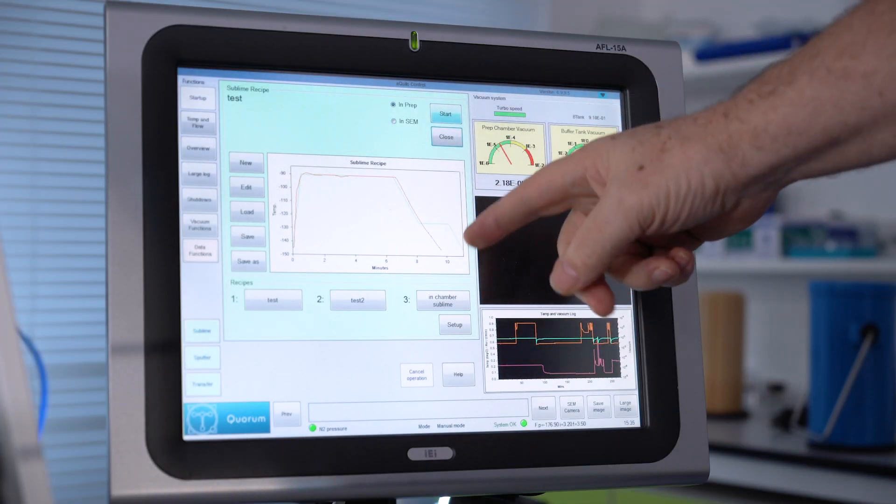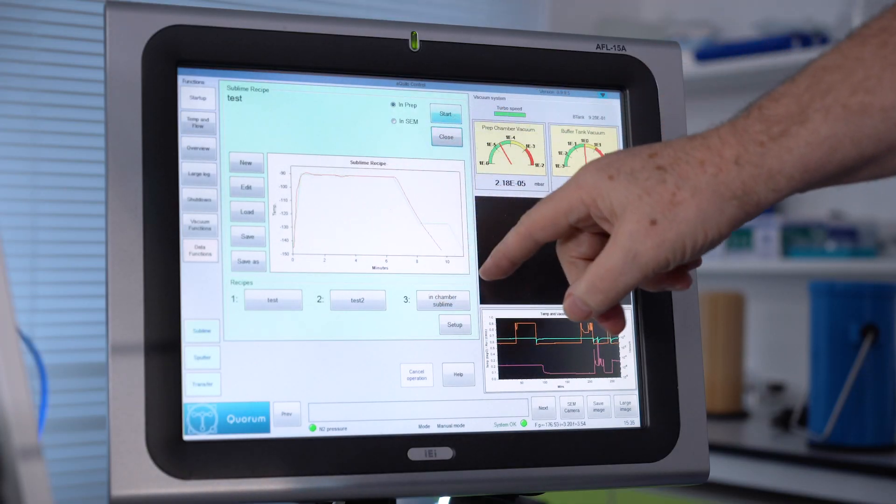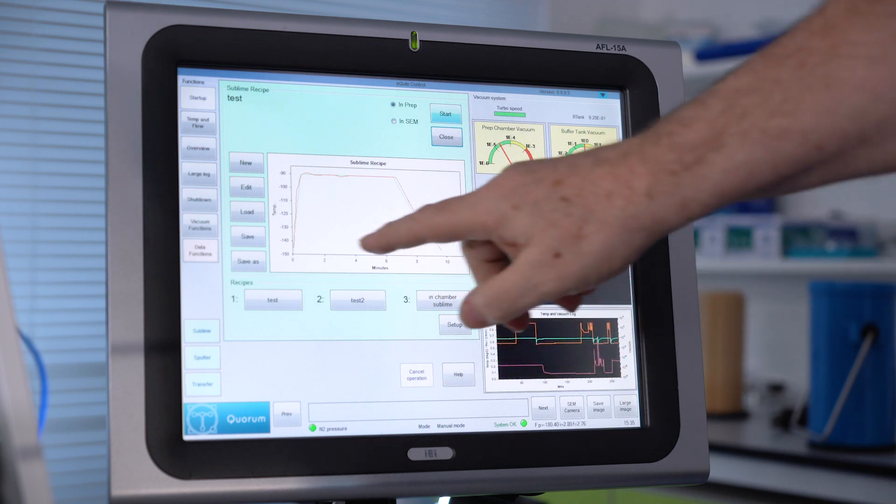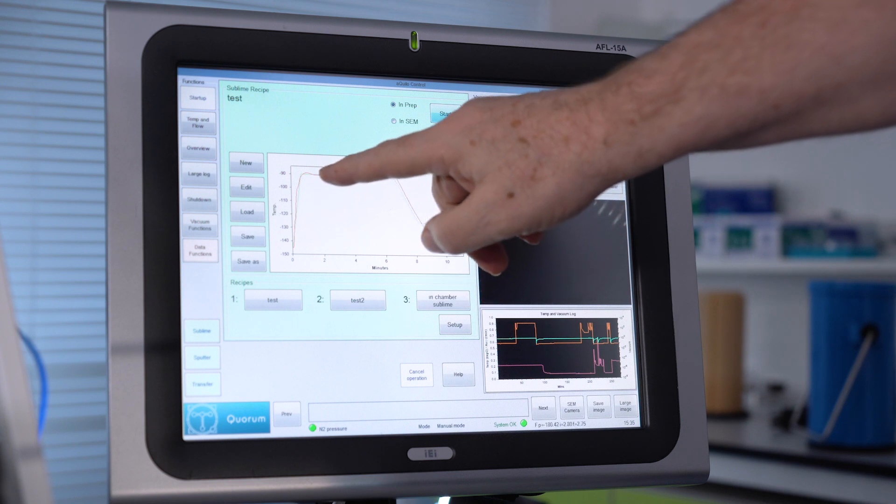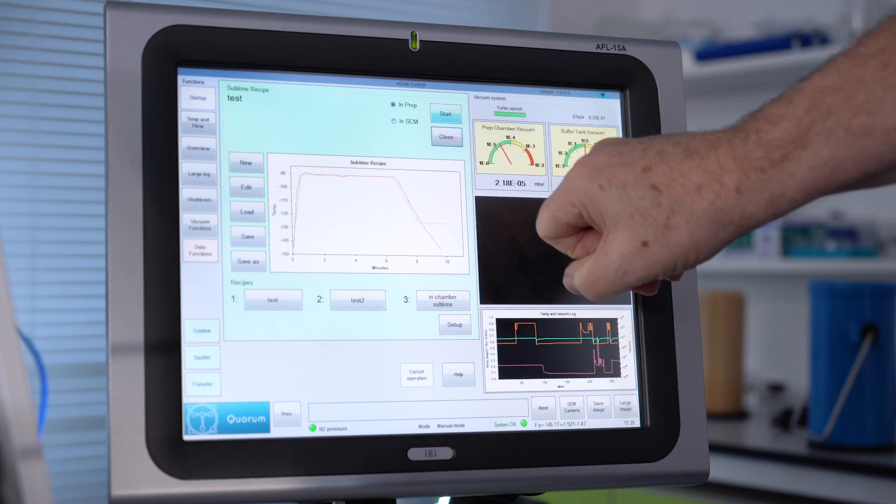So here we can see our defined sublimation curve with one of the recipes we have chosen here. The green line is what we defined and the red line is what the sample actually experienced during the sublimation.